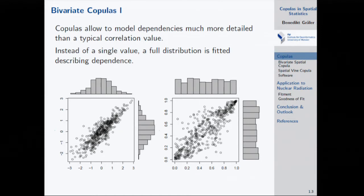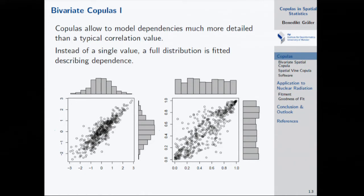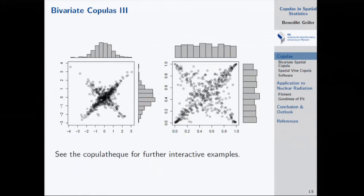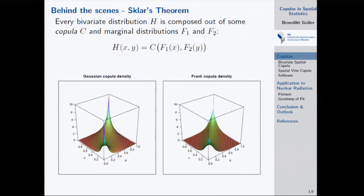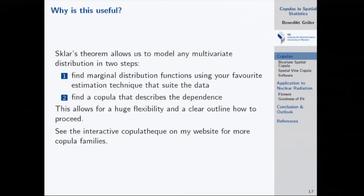This can also be extended to space-time: binning not only for spatial distances but for spatial-temporal distances. Just as the variogram has a gamma value for each combination of spatial and temporal distance, you get one of these scatter plots for every bin. You'd like to understand how the scatter plots change over both space and time — instead of a single value describing dependence, you use a full distribution.